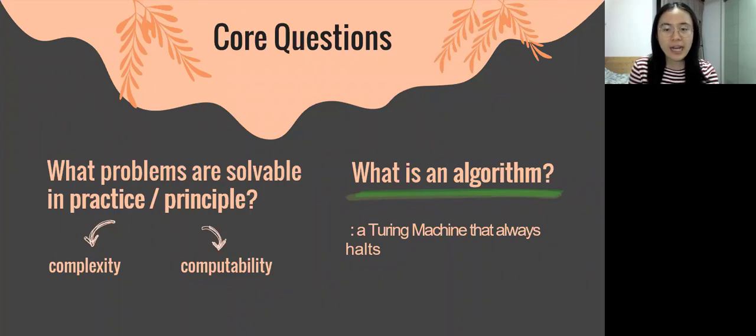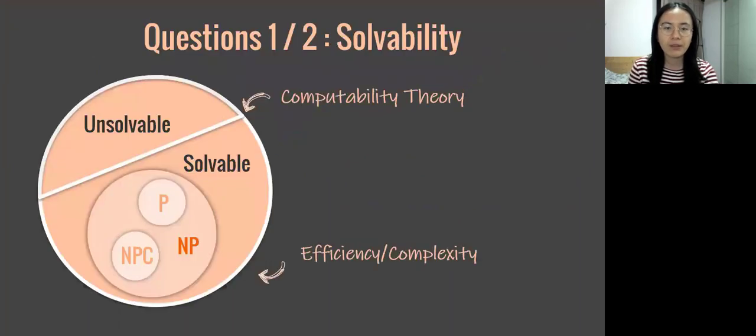How can we define algorithms formally in order to characterize problems as solvable or unsolvable? At the end of this lecture, we'll define an algorithm as a Turing machine that always halts. Now, let me elaborate these two questions.